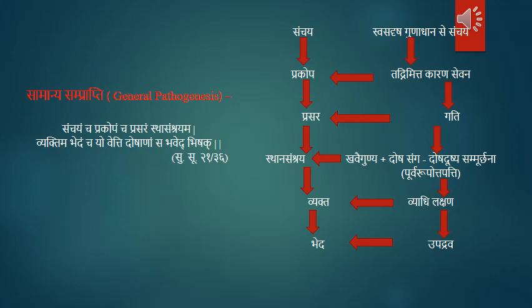General Samprapti and the six stages of Kriya Kala are known as Saman Samprapti. There are six stages of development of disease known as Kriya Kala: Sanchaya, Prakopa, Prasara, Asthana Samshraya, Vyaktibheda, and Bheda. These are the six stages of Samprapti and they are included in Saman Samprapti.